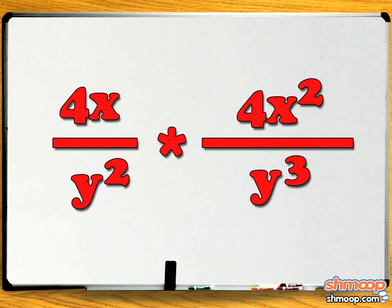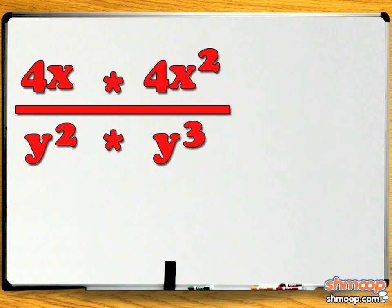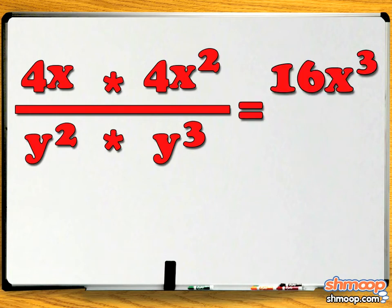Now we can just multiply across the top of the two fractions. 4x times 4x squared equals 16x cubed, and multiply across the bottom, y squared times y cubed.